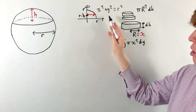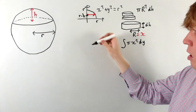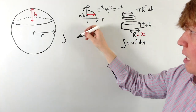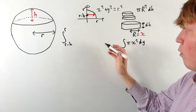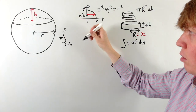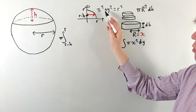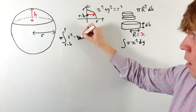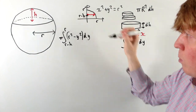For this circle, we have x² + y² = r², and we're integrating between r − h and r. So the integral is from r − h up to r of π x² dy. We write π on the outside, and we rewrite x² as r² − y², which makes the integrand nice to integrate with respect to y.